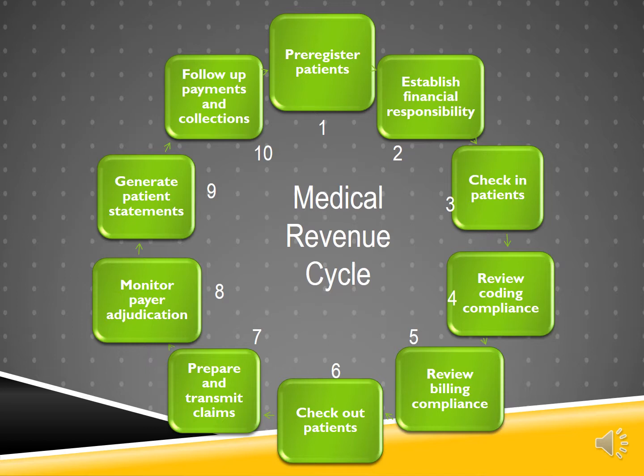What type of insurance does the patient have? What services will be covered under the plan? How will the bill be paid? What is the patient responsible for paying? Step 3: when a patient arrives for their appointment, they are checked into the office and the practice management system. This is where the patient's personal and insurance information is double-checked and updated in the computer. A copy of the patient's insurance card is made, and sometimes co-payments are collected at the time of check-in.